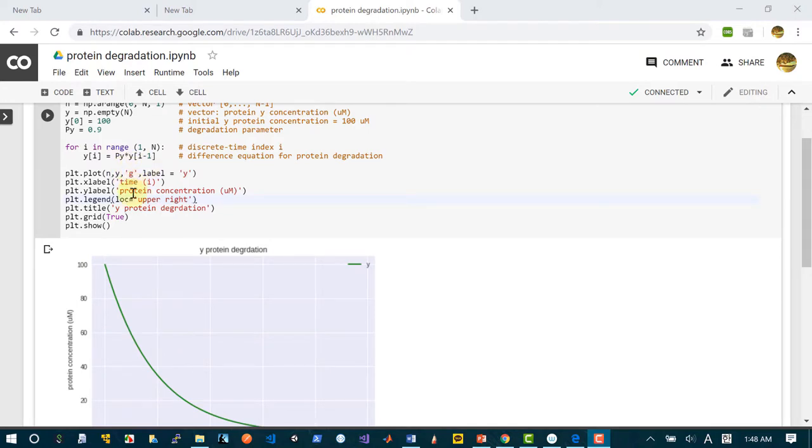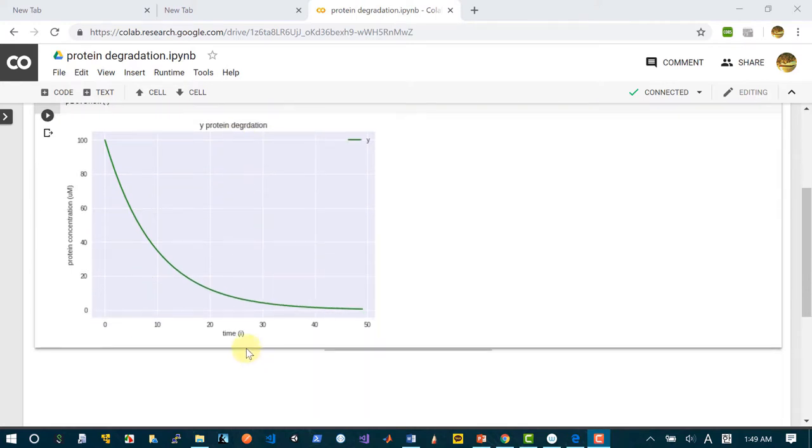This g stands for green. That's why we have green color graph here. And label y is shown here. Plot dot x label time i is shown here.